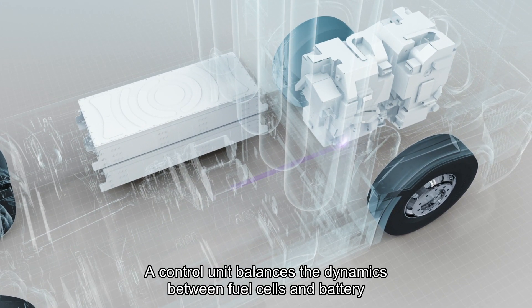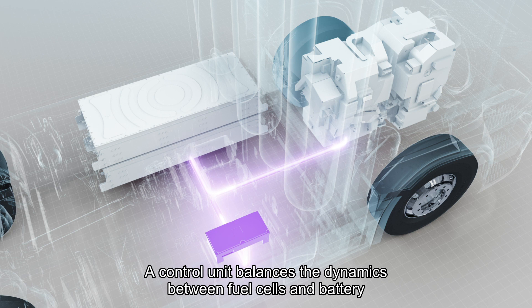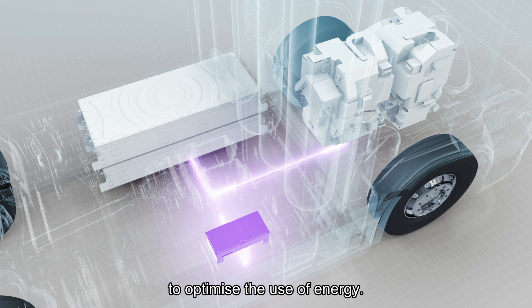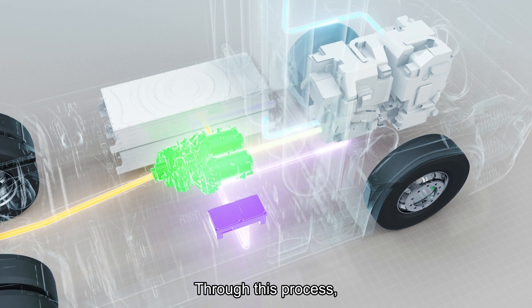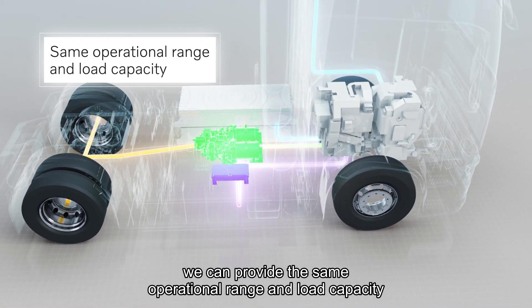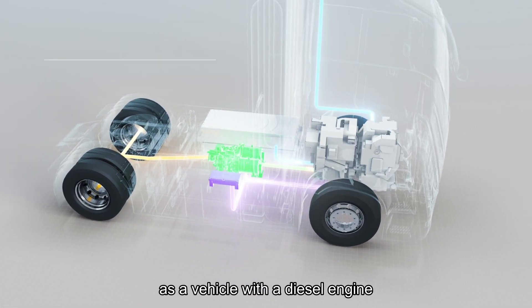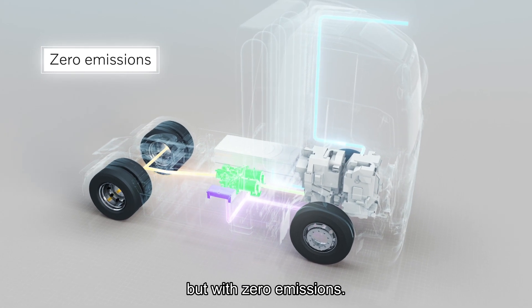A control unit balances the dynamics between fuel cells and battery to optimize the use of energy. Through this process, we can provide the same operational range and load capacity as a vehicle with a diesel engine, but with zero emissions.